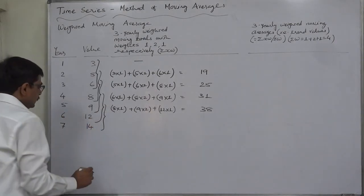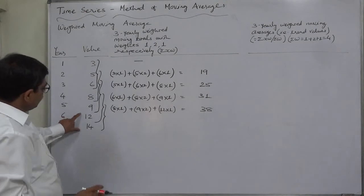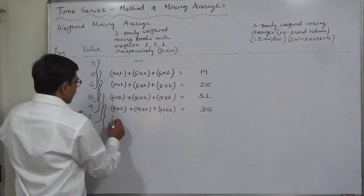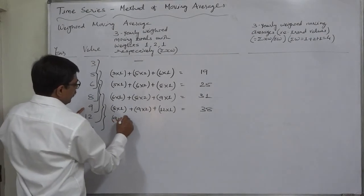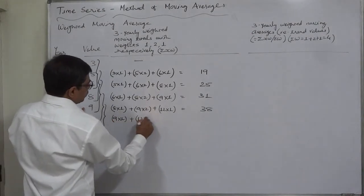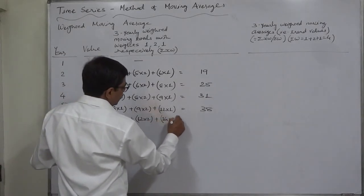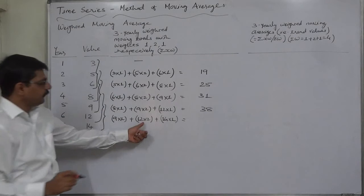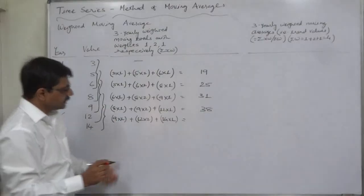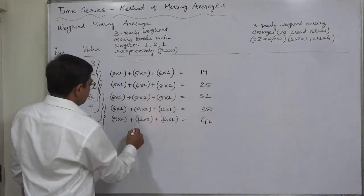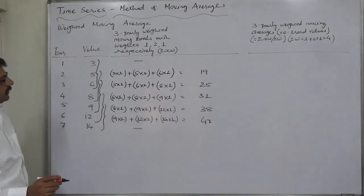And next total of the last 3 values. So it will be the last summation, because after that we shall not have 3 values for summing up. 9 is first, it is multiplied by 1. 12 is second, it is multiplied by 2, and 14 is third, multiplied by 1. 12 into 2 is 24, plus 14 is 38, plus 9 is 47. And against the last value nothing will be written.